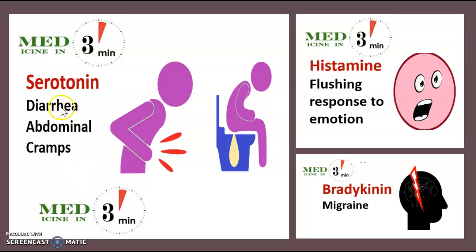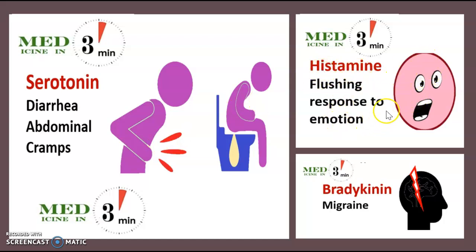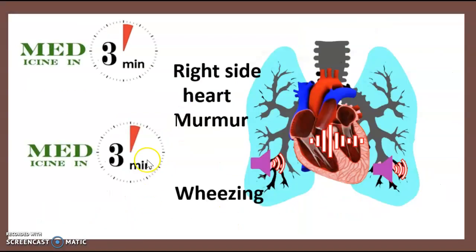There are three characteristics in this syndrome. Some symptoms are linked to serotonin, others are linked to histamine, and others are linked to bradykinin. When it is about serotonin, there is diarrhea and abdominal cramping. If it is linked to histamine, there is flushing responsive to emotion. If it is about bradykinin, it gives migraine. Other symptoms include a right-sided heart murmur and pulmonary wheezing.